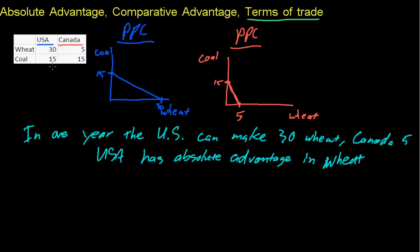Now, for coal production, the U.S. can produce 15 units and Canada can produce 15 units, so no one has the absolute advantage because they're equal. That's all there is to say about absolute advantage - it's just who can produce more of a good given the same inputs. Here, the U.S. has an absolute advantage in wheat because 30 is greater than 5, but neither country has an absolute advantage in coal because both can produce 15 units per year. In the next video, we'll talk about comparative advantage and terms of trade.